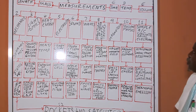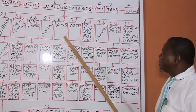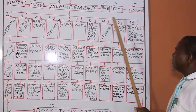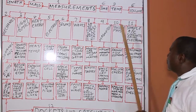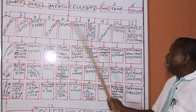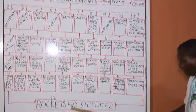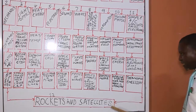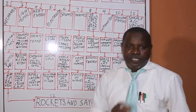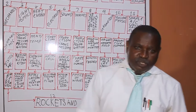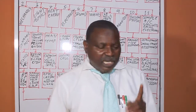We make use of either length, length and mass, mass and time, temperature or volume in any of these, together with rockets and satellites. All these things are very important — measurement is very important and we use them a lot.